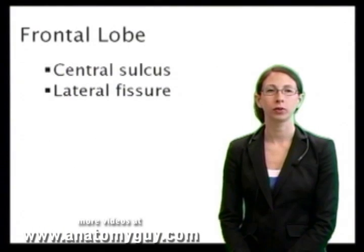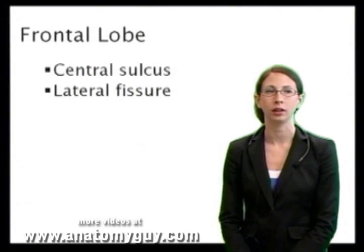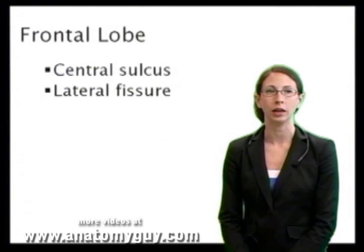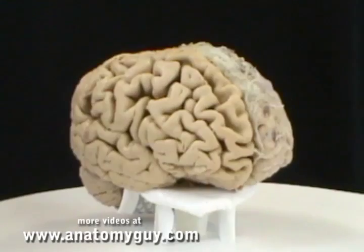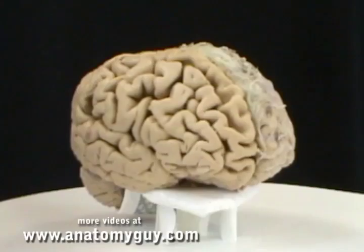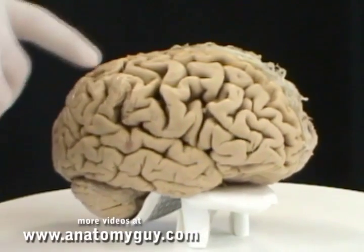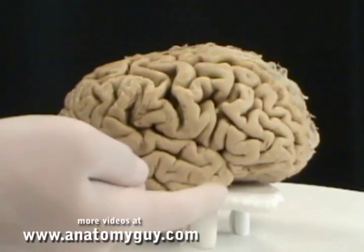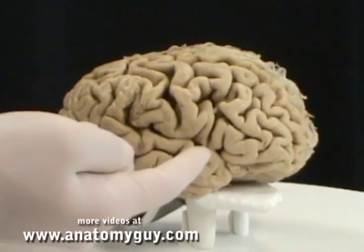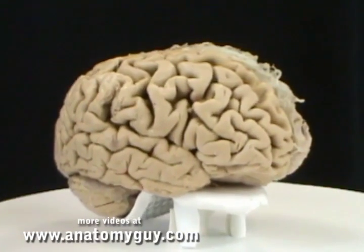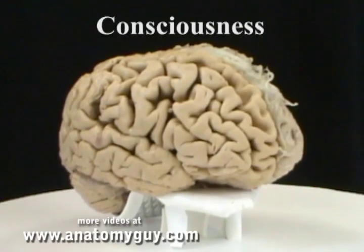The frontal lobe's posterior edge is delineated by the central sulcus and the inferior edge is delineated by the lateral fissure. On the whole brain specimen, the most anterior lobe is the frontal lobe. The posterior edge of the frontal lobe is the central sulcus as pointed out by Mr. Big Hands, and the inferior delineation is the lateral fissure. The frontal lobe is important for executive function and consciousness as well as motor.